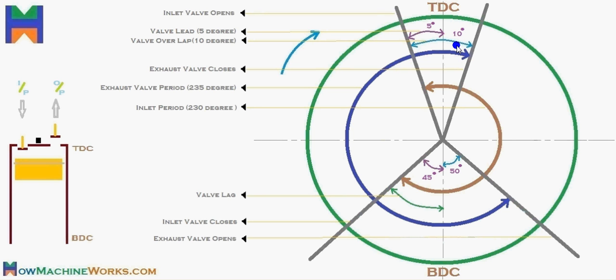There is another important term — the valve overlap. The valve overlap happens at top dead centre. The inlet valve opens 5 degrees before TDC, and the exhaust valve closes 5 degrees after TDC. So at that point in time both valves are in the open condition, meaning valve overlap is occurring.